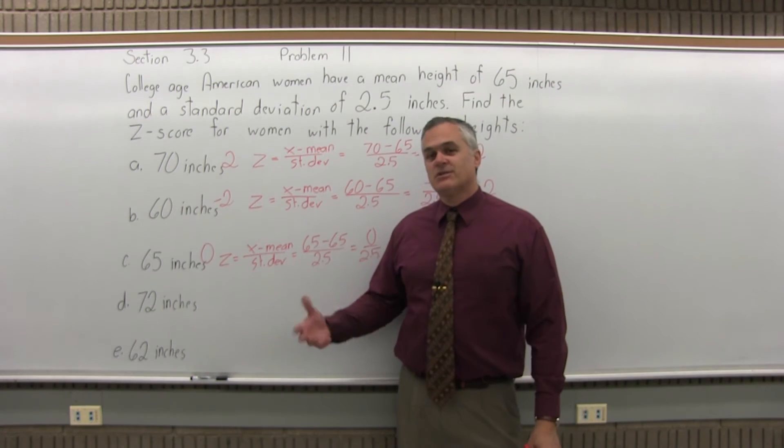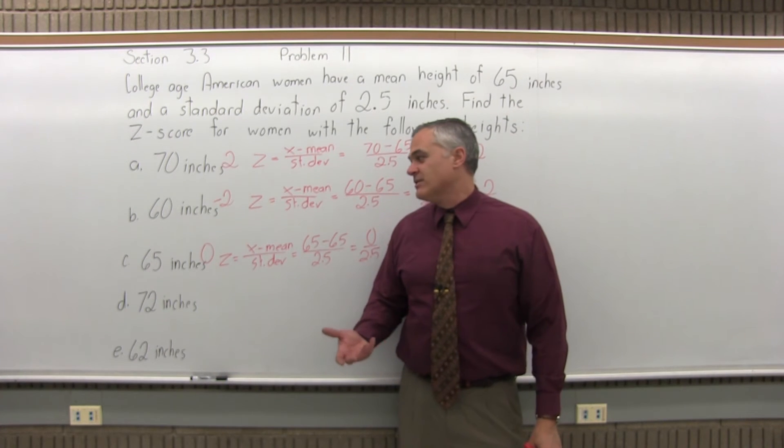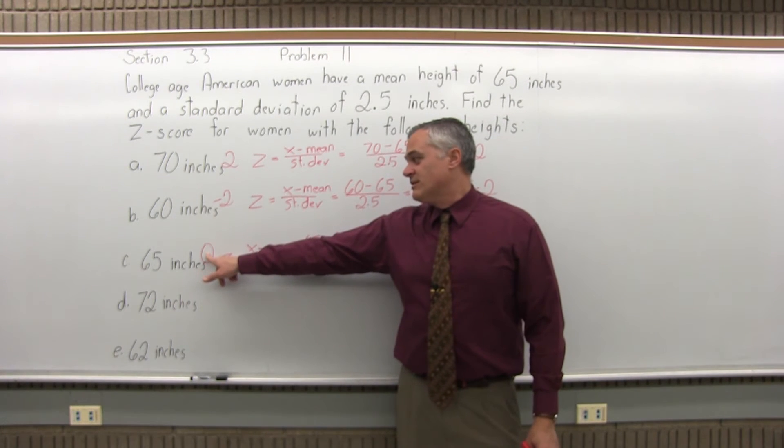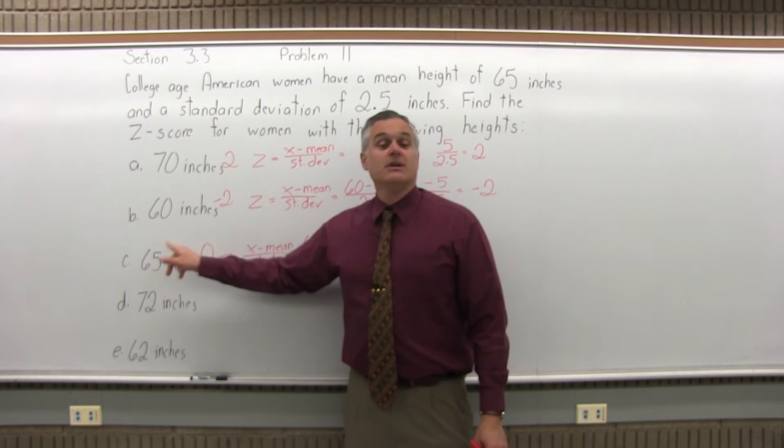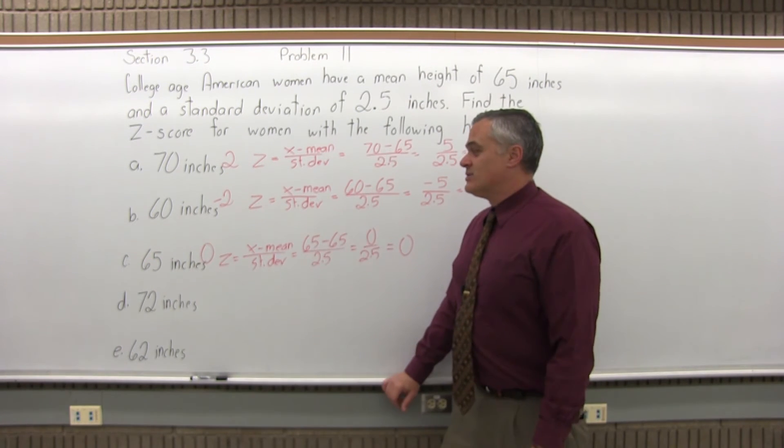Again, z-score is how many standard deviations away from the average value. You have 0 standard deviations away from the average value. Your score is the average. That's why it has a z-score of 0.